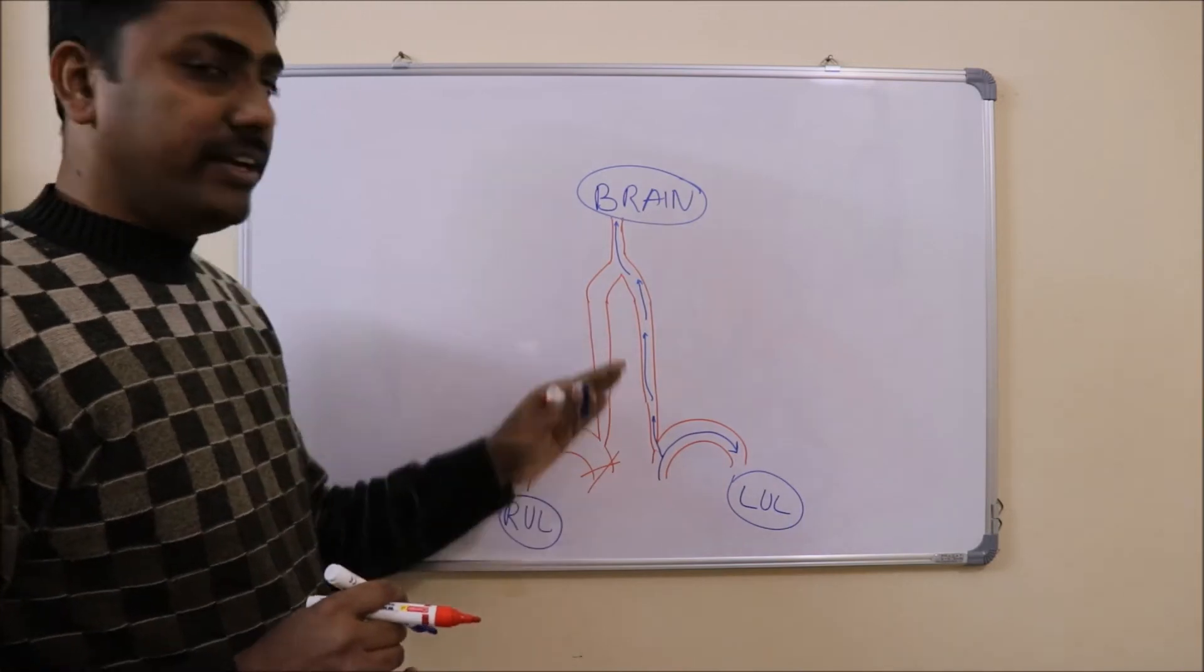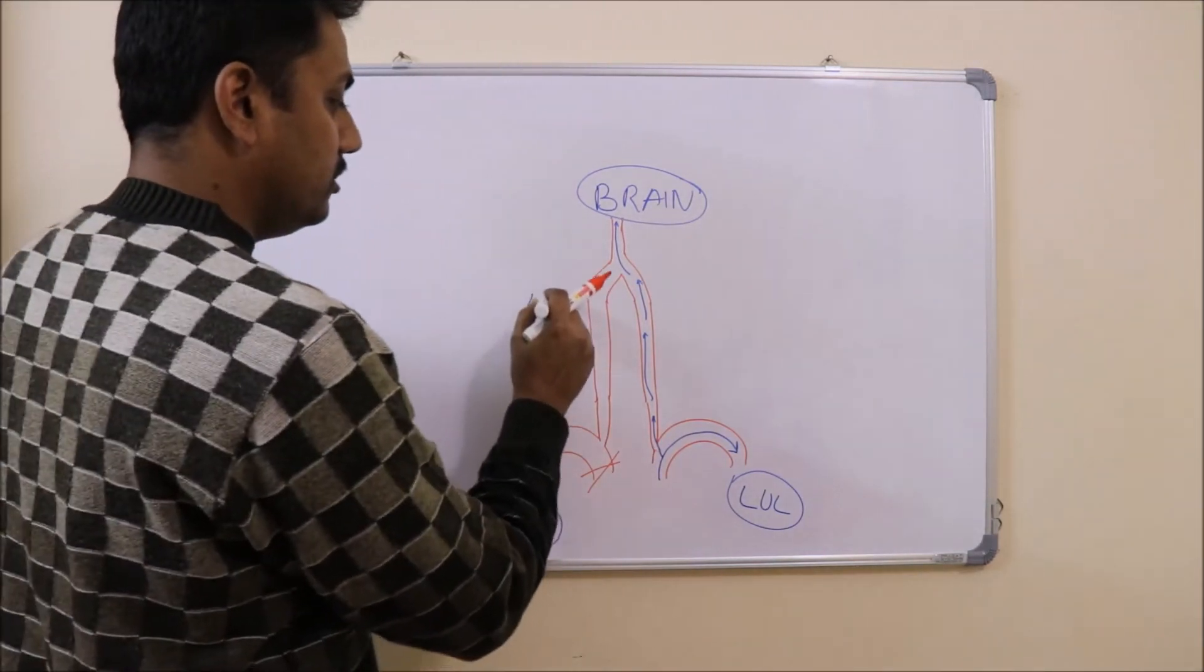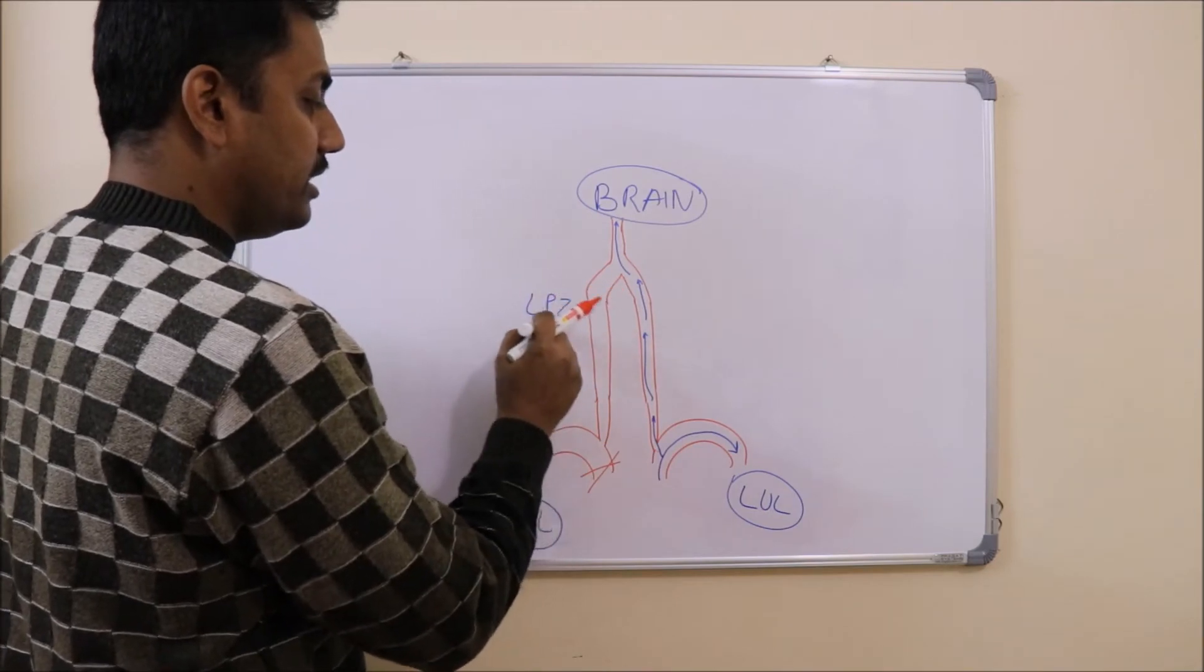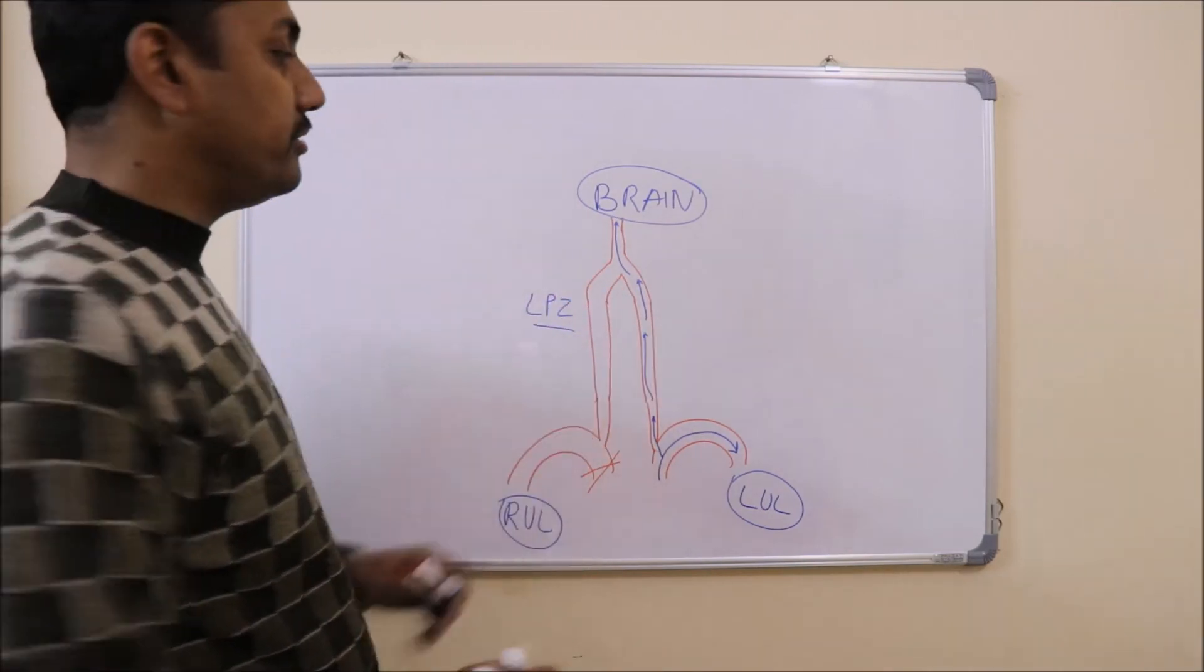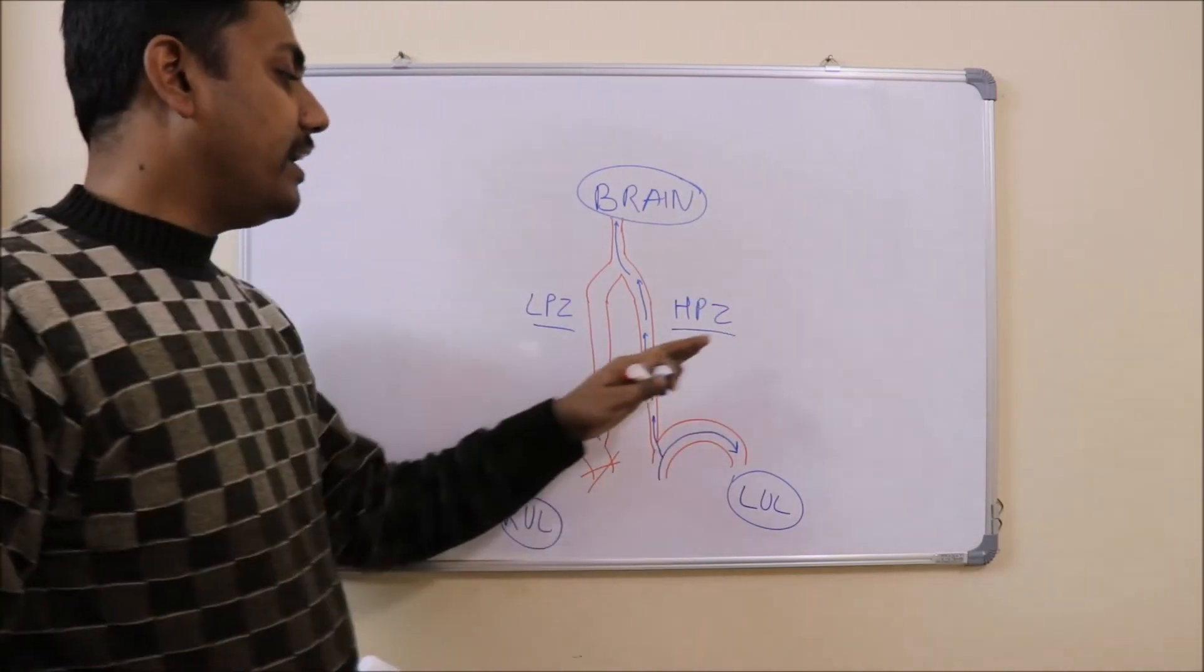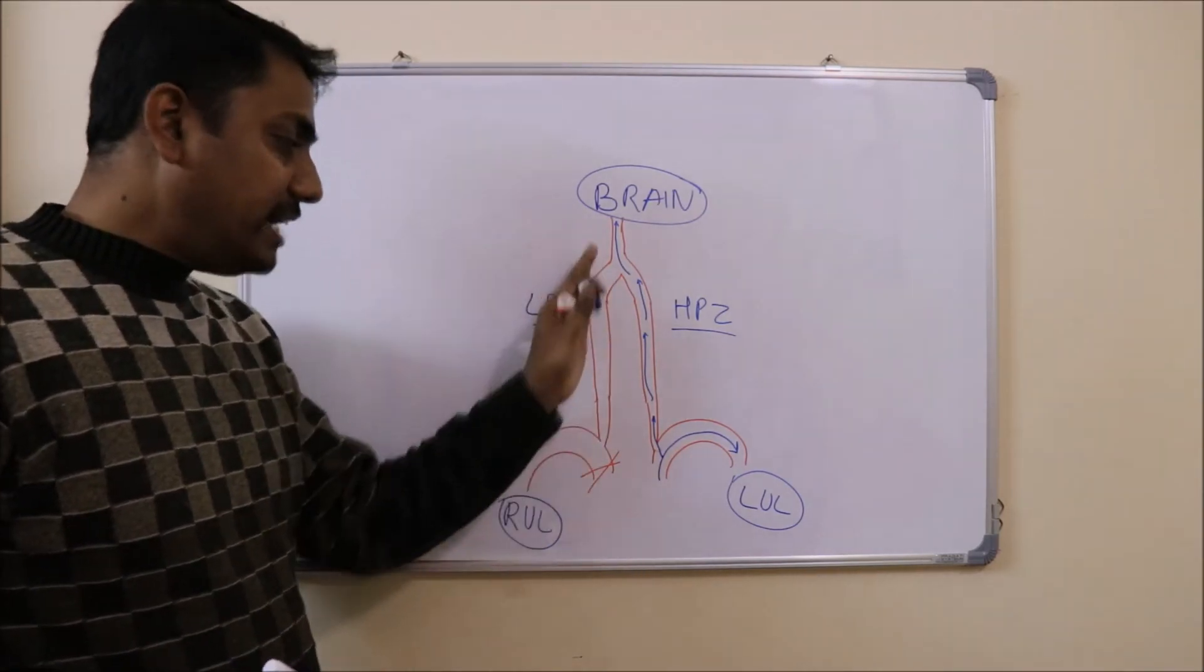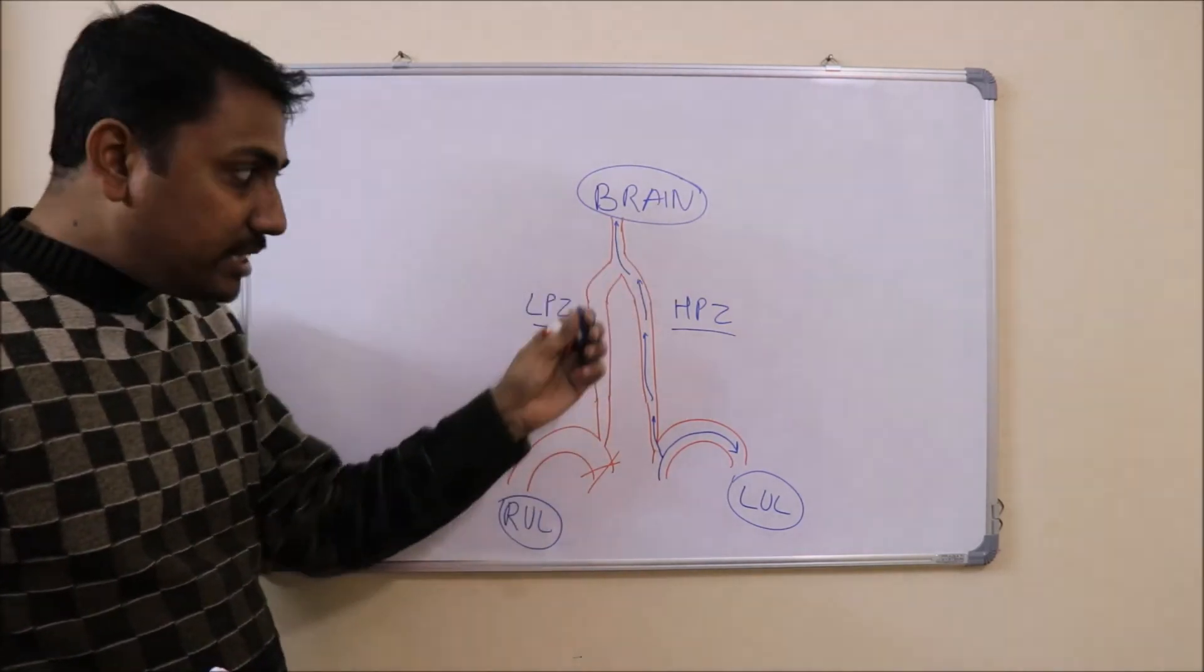But as you can see, this area is devoid of any blood. There will be a low pressure zone, and here blood is present so it will become high pressure zone. We all know liquids flow from high pressure zone to low pressure, so this right vertebral artery will steal some blood from this left vertebral artery.